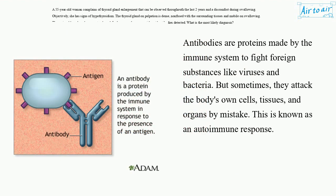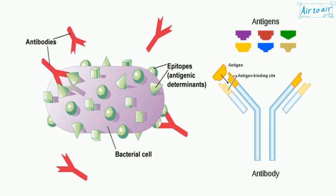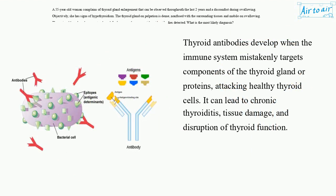Antibodies are proteins made by the immune system to fight foreign substances like viruses and bacteria. But sometimes they attack the body's own cells, tissues, and organs by mistake. This is known as an autoimmune response. Thyroid antibodies develop when the immune system mistakenly targets components of the thyroid gland or proteins, attacking healthy thyroid cells. It can lead to chronic thyroiditis, tissue damage, and disruption of thyroid function.